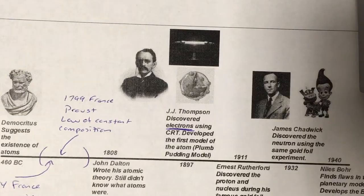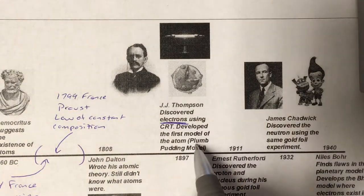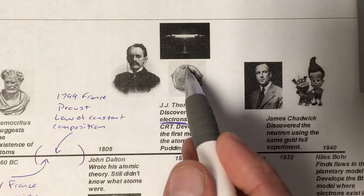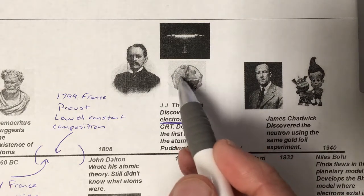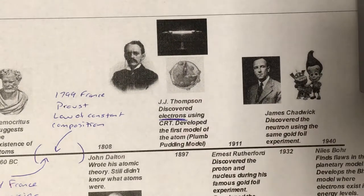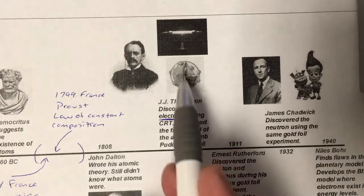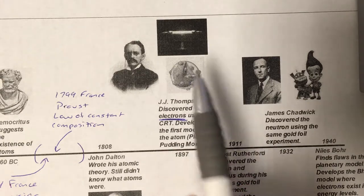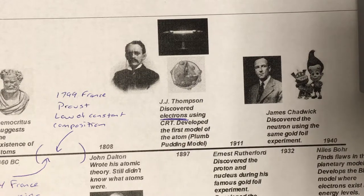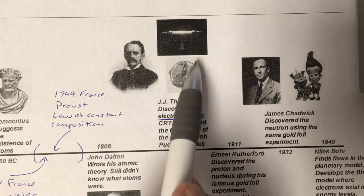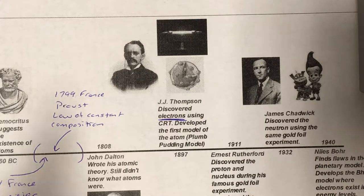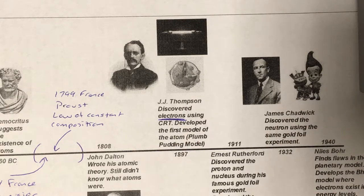The discovery of the electron gives us the ability to start thinking about what an atom actually is. That's where Thompson comes up with the plum pudding model of the atom — a massless cloud of positive charge with electrons scattered through it. It was named after plum pudding because the bread is the massless cloud of positive charge and the raisins or dried plums are the electrons. The best way to think about it is the chocolate chip cookie model: the cookie is the positive charge, the chocolate chips are the electrons. The electron is the only particle known at this point.